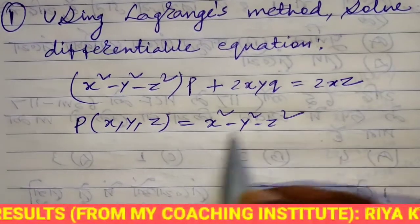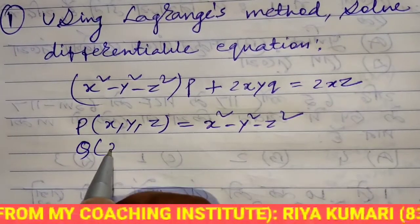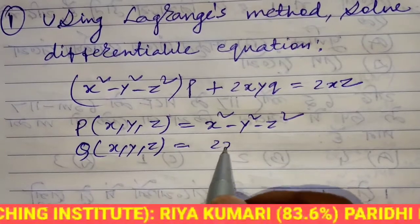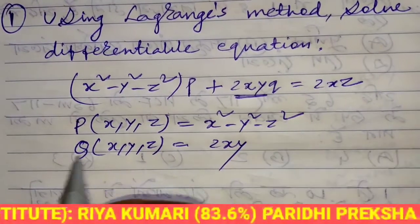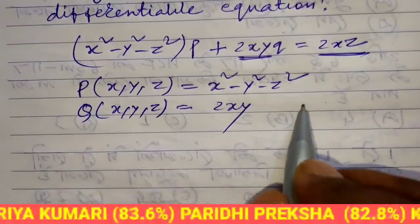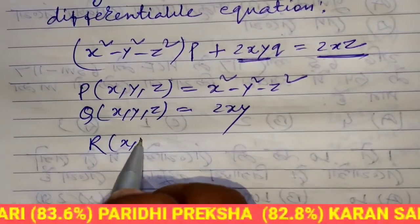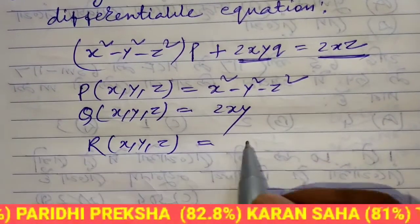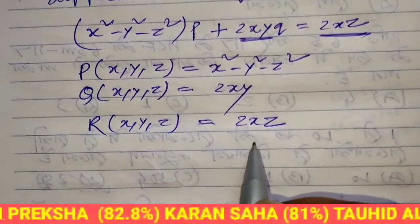Q(x, y, z) is equal to 2xy. R(x, y, z) is equal to 2xz.